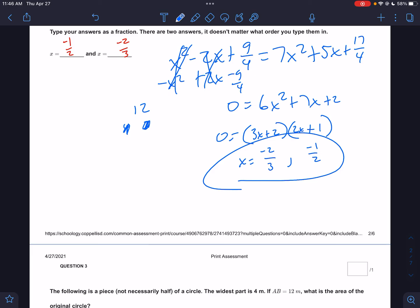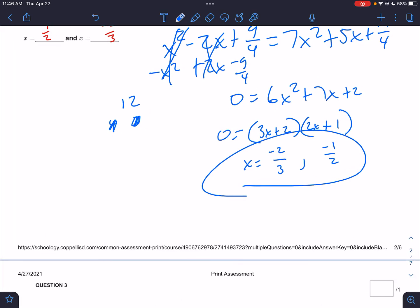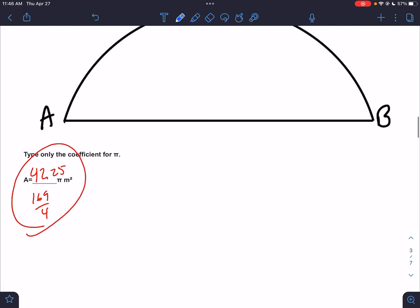How do I undo 3x + 2? I subtract 2, divide by 3. I subtract 1, divide by 2. Those are my answers: negative 1/2 and negative 2/3. You have to know how to undo. It's what makes it 0.